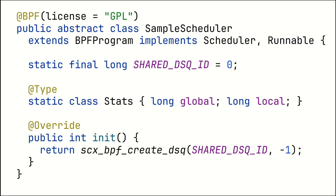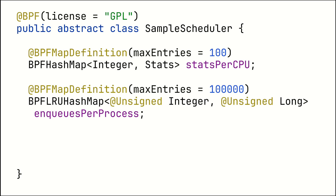Now you probably want to see all the code, and here it is. Starting with the base structure: you have a class — I call it here sample structure — and this class extends the eBPF program and implements the scheduler. We first define our scheduling queue ID because we want to have our own, and then we define some types. Here we define the type stats, which contains the stats relating to the CPU and whether the process comes from a local or a global CPU queue. Then we initialize our scheduling queue via scx_bpf_create_dsq, by overriding the init method of the scheduling interface.